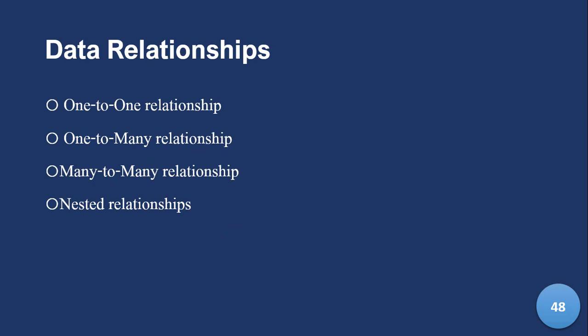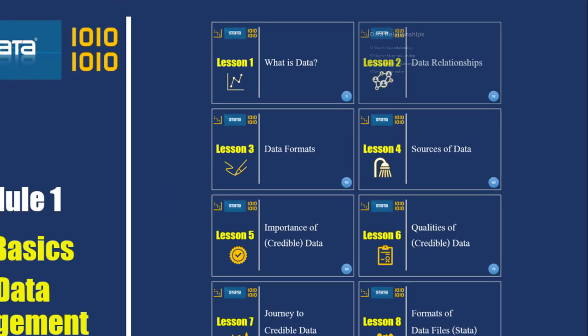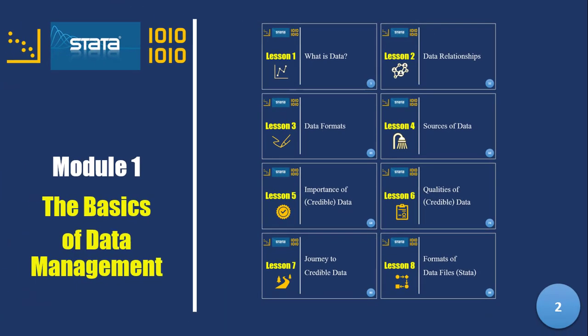An overview of these relationships: we have talked about the one-to-one, where the relationship is constrained such that only one entity connects on both sides. Then we talked about the one-to-many relationships, and the many-to-many, and then the nested relationships. Now let's move on to Lesson 3.